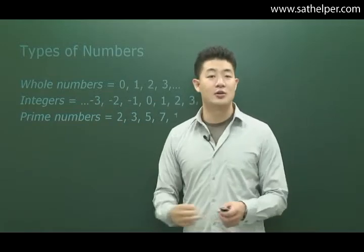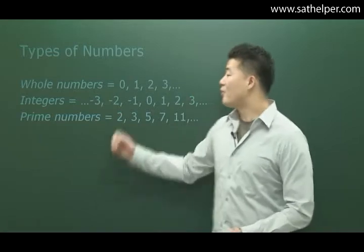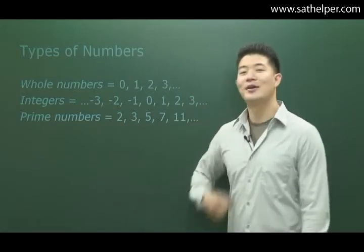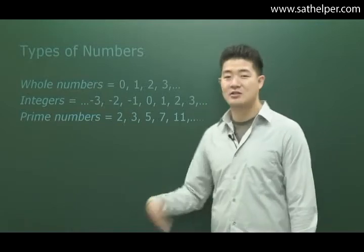Now prime numbers, here's also where students go a little bit wrong. Prime numbers, 1 is not a prime number. It starts with 2, 3, 5, 7, etc.